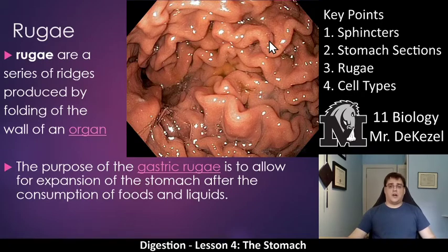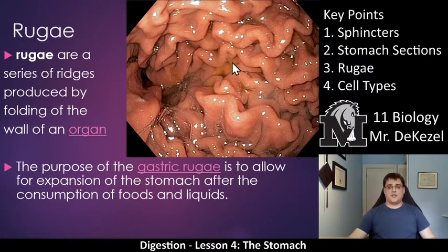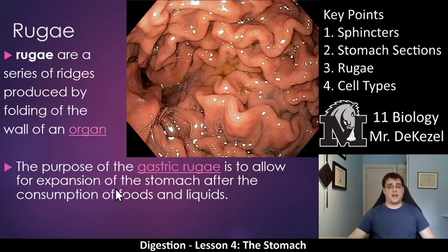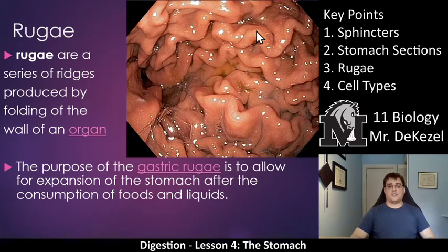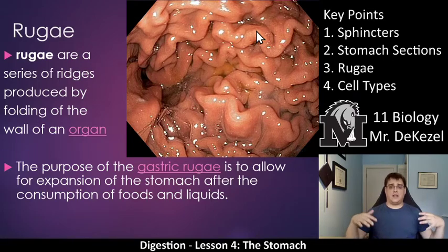So this is a picture of a completely empty stomach. When a stomach is completely empty you can see there are a whole bunch of folds, and they are called rugae. Rugae are the series of ridges produced by the folding of the walls of an organ. The purpose of the gastric rugae is to allow for expansion of the stomach after the consumption of foods and liquids — it's all folded up so that when you eat, the stomach can expand. It is also able to contract different parts of the stomach to aid in mixing of food with gastric juices. That is key point three.